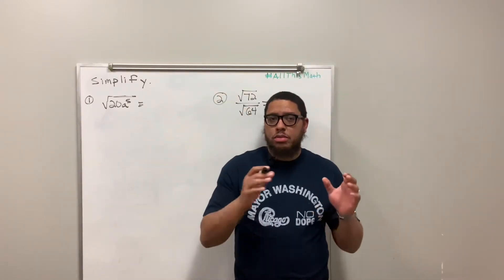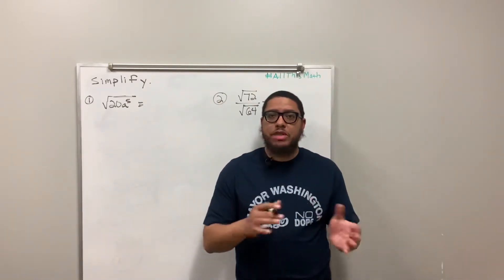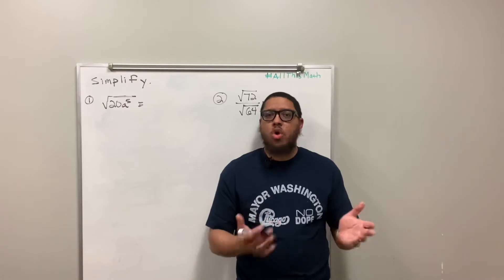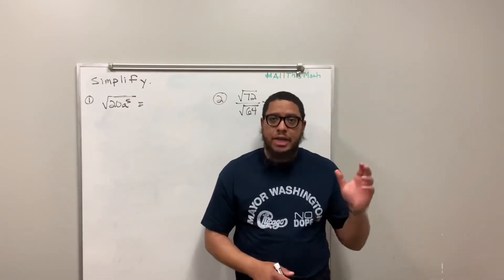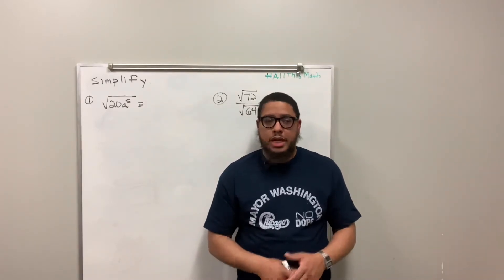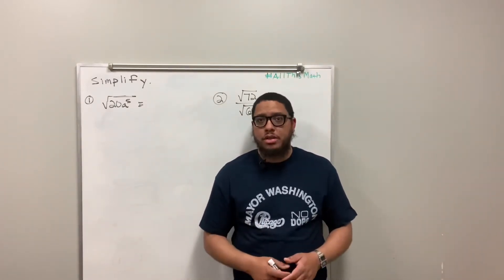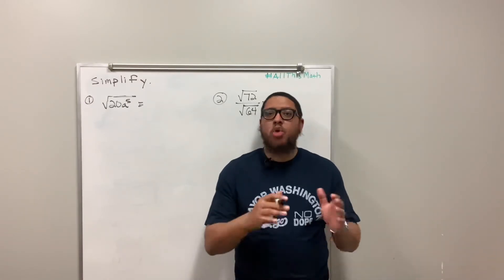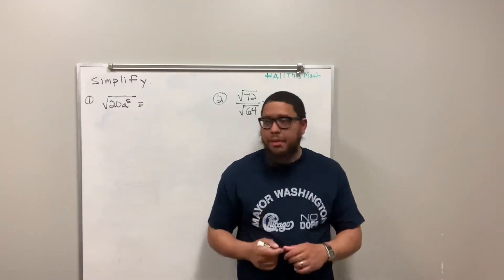Every number has a square root, but every number is not a perfect square. For example, 99 — there's no whole number that you can multiply by itself to give you 99. You can multiply a decimal by itself to give you 99, but not a whole number. No decimals.